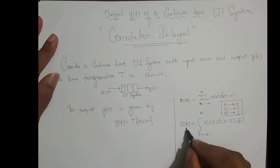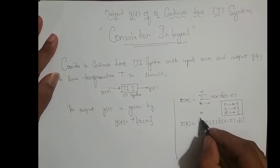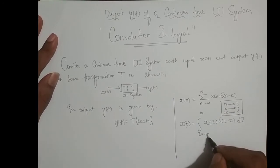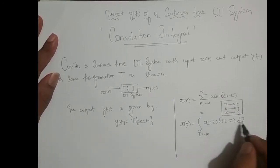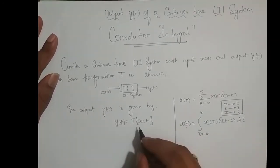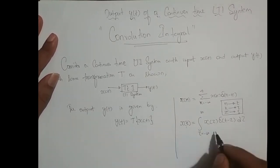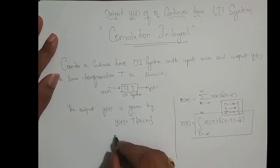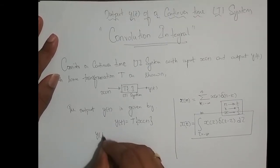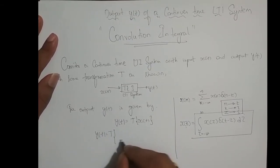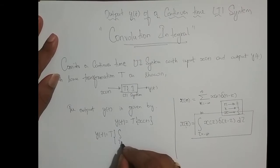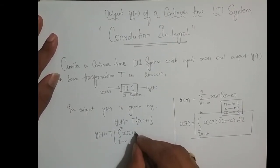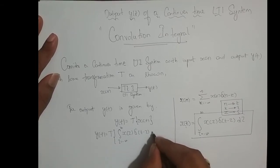Any continuous time signal can be represented as: integrating tau varying from minus infinity to infinity of x(tau) delta(t minus tau) d tau. Therefore, y(t) equals the transformation applied to the integral from minus infinity to infinity of x(tau) delta(t minus tau) d tau.